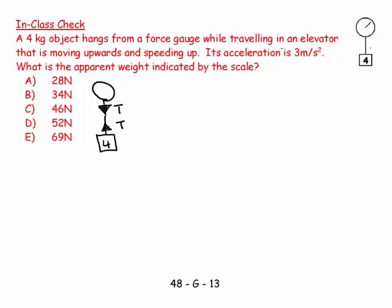Now it says a 4kg mass hangs from a force gauge while travelling in an elevator that is moving upwards, so our velocity is upwards and speeding up. Well if I'm moving upwards and speeding up, my acceleration is also upwards. A little bit of conceptual insight there. And the acceleration is equal to 3m per second squared.